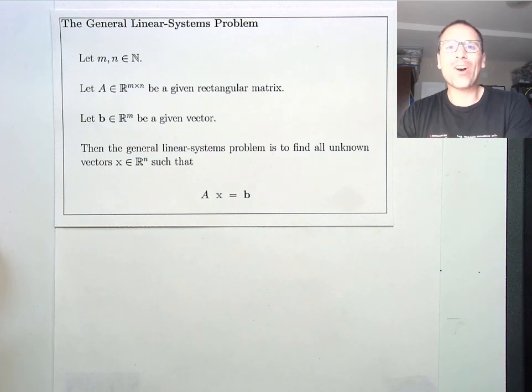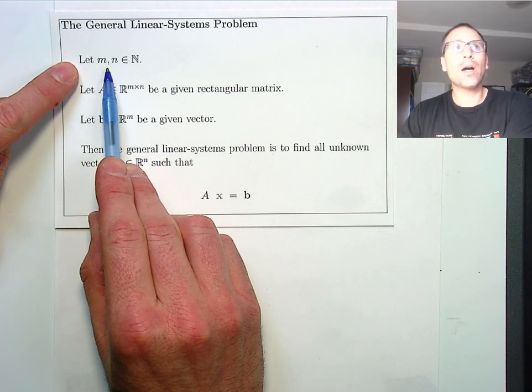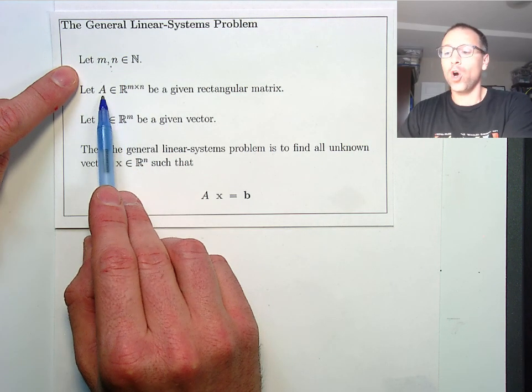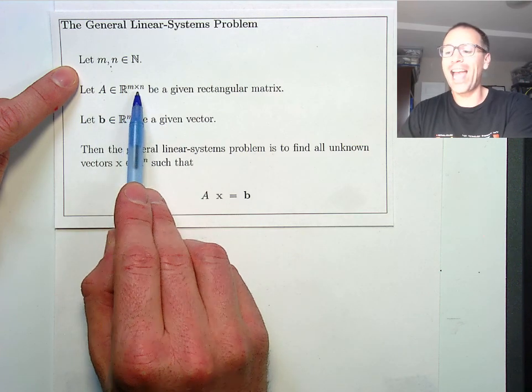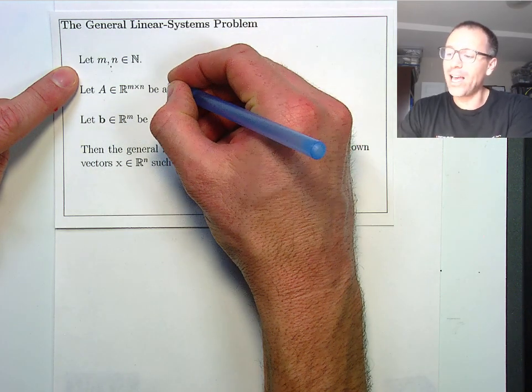Let's do a quick recall of the general linear system problem statement. We start with two positive integers, m and n, which are going to define the dimensions of a matrix.